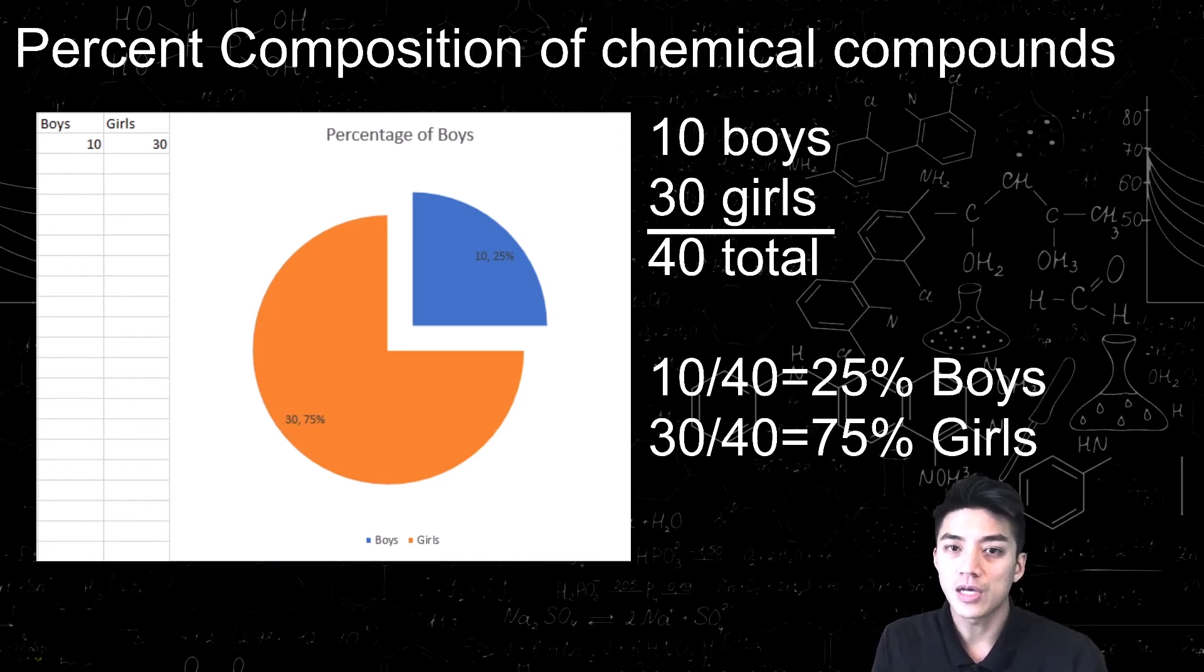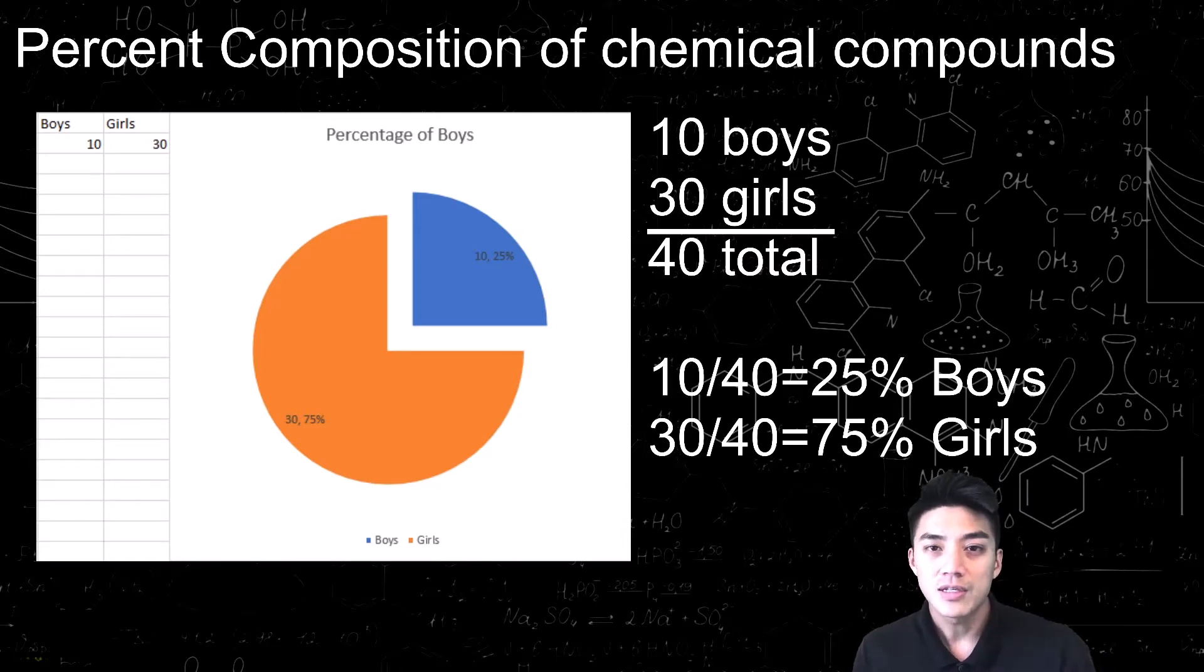Sometimes you'll be asked to solve for the percent composition of a chemical compound. This will allow you to understand its chemical makeup, its overall chemistry, and all its physical properties much better. Finding percent composition is like understanding parts of a whole.